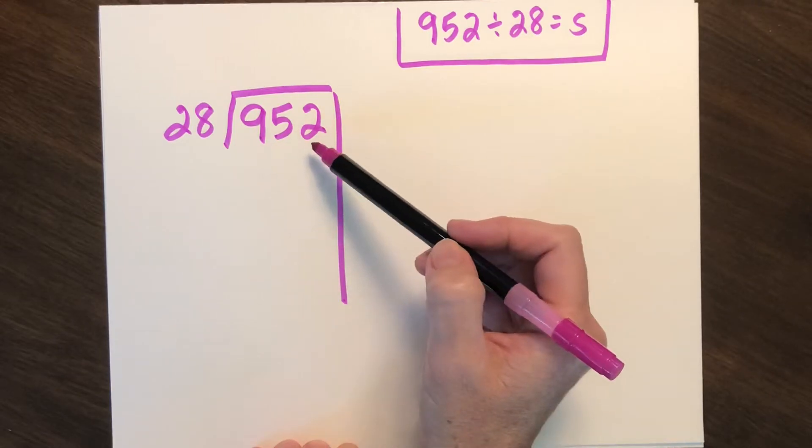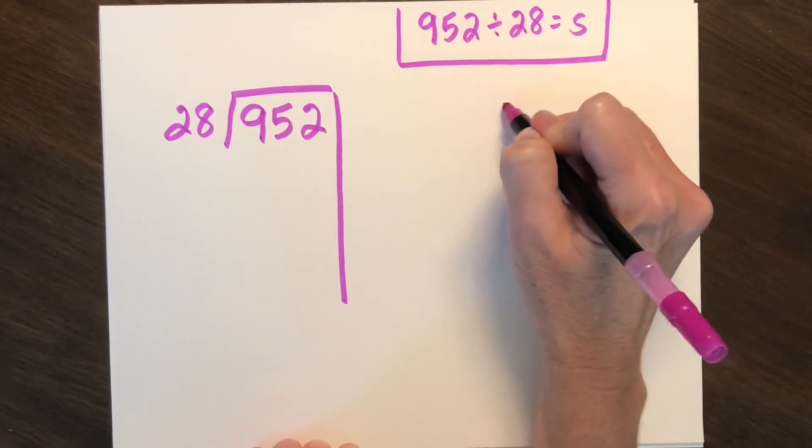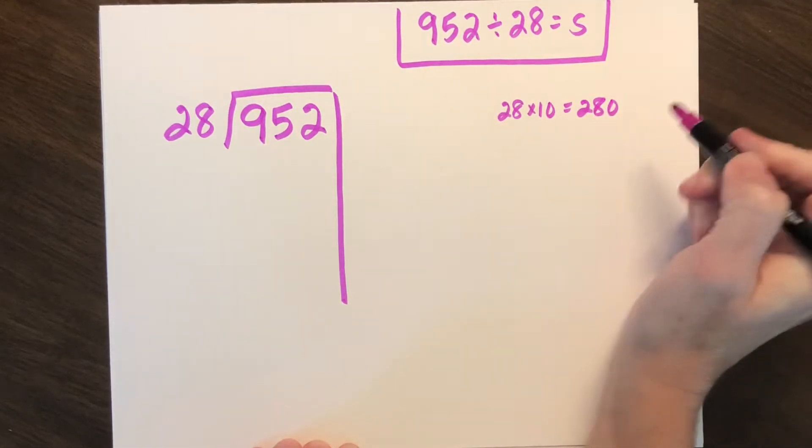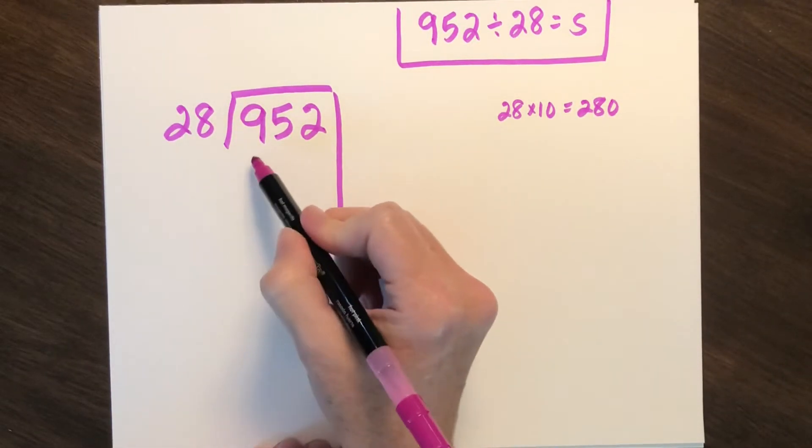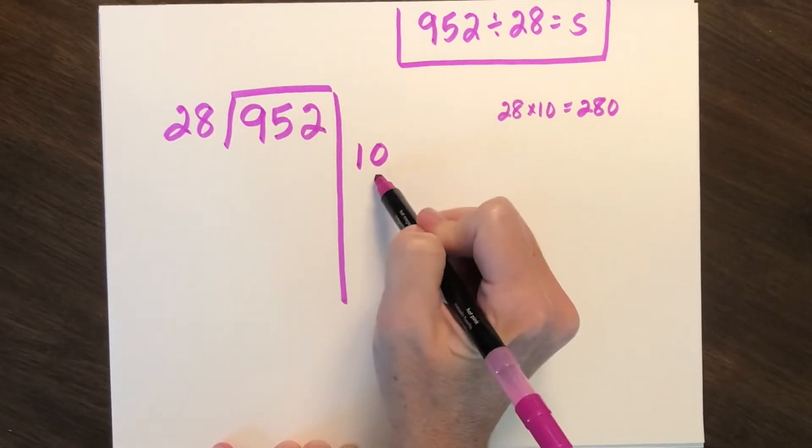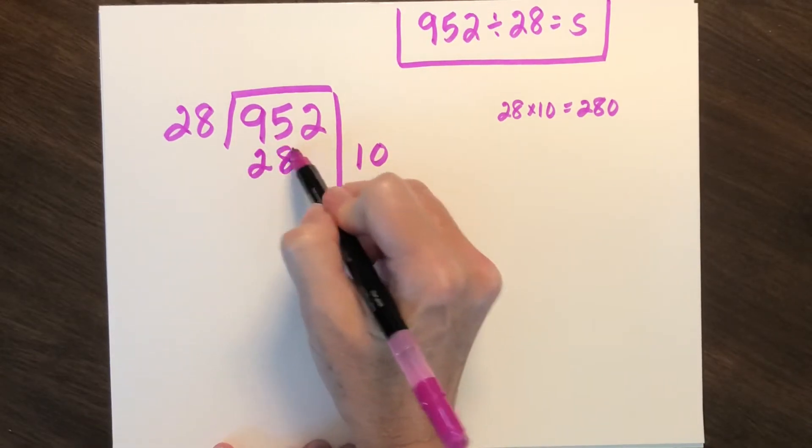Looking at 952, I see it's in the hundreds. I know that 28 times 10 is 280, so I know I can do at least 10 groups of 28 in 952. So I can go ahead and put my 10 out with my partial quotients and subtract 280.